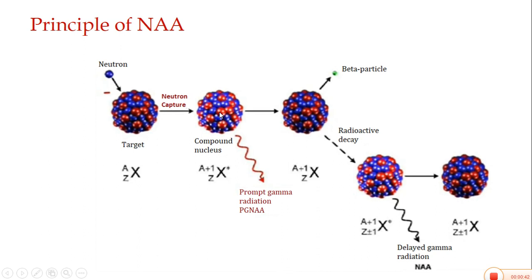This prompt gamma radiation also identifies the kinds of elements present inside the sample material. The excited atom nucleus then undergoes de-excitation by beta particle emission. This beta particle emission occurs due to the regeneration of the neutron that penetrated inside the nucleus, causing a proton to be found inside the nucleus. This proton then transfers to its exact place inside the nucleus to gain further stability, resulting in another emission of gamma radiation.